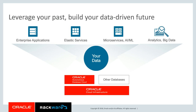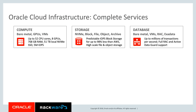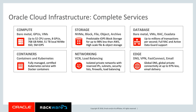Oracle Cloud includes a complete set of services required to run any kind of applications. This includes compute services of various shapes and sizes. OCI was the first cloud platform to make bare-metal servers available, alongside VMs in various shapes and sizes. We have different kinds of storage: block storage, file storage, and object storage — with very high-performance NVMe block storage available.